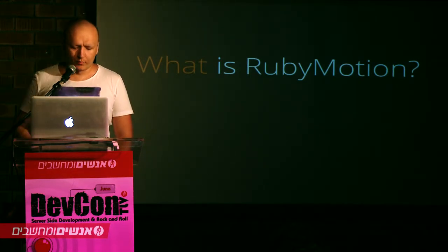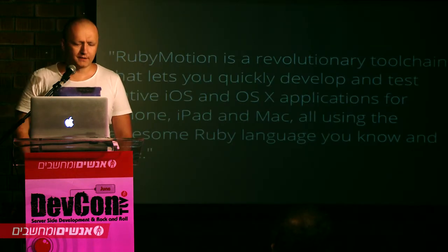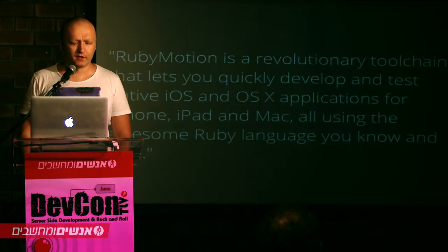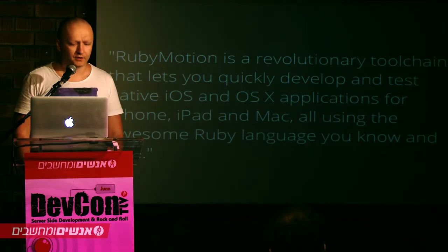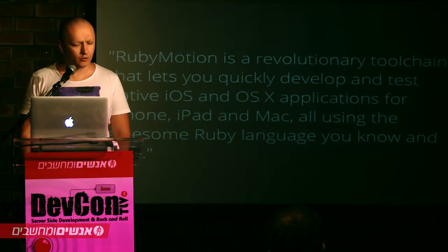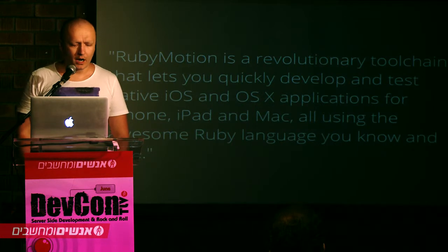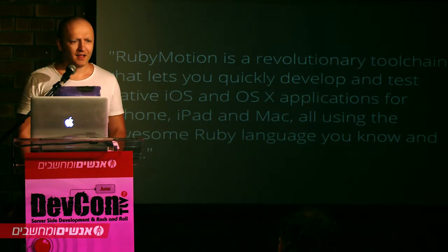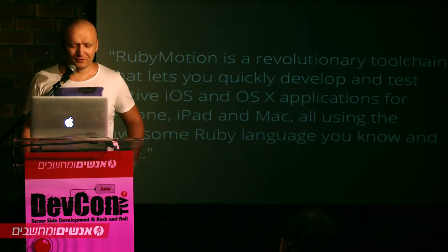So what is RubyMotion? RubyMotion is a revolutionary tool chain that lets you quickly develop and test native iOS and OS X applications for iPhone, iPad and Mac, all using the awesome Ruby language you know and love — that is, if you do.